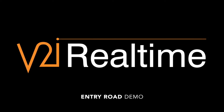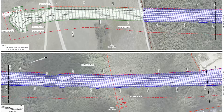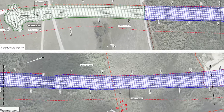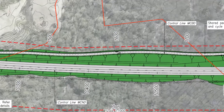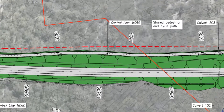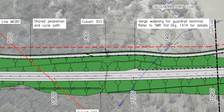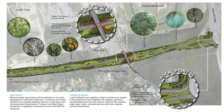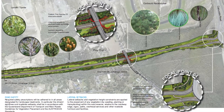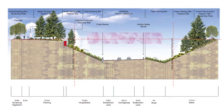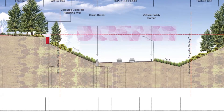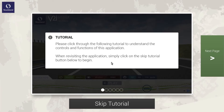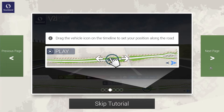V2i Realtime utilizes existing technical information such as 12D, CAD, technical drawings and plans to visually represent a planned project in an easy-to-use and understand immersive virtual design environment. A short tutorial outlines the main features to first-time users.